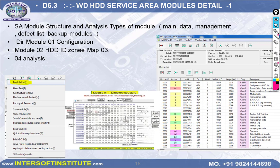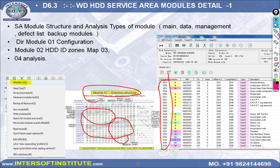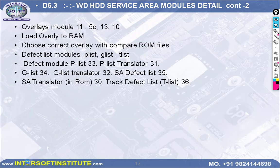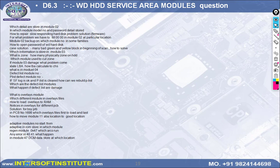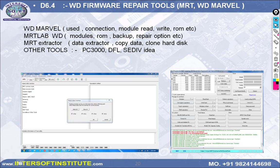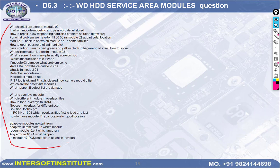Then service area: what is the service area, service area lease module, head test, read/write module, directory structure. We open HXD and show all locations in the directory — what 01 means, what 02 means, which modules are important. We show overlay modules, P-list, G-list, translator, and all important modules — which are needed for data recovery and which are not. After that, RAM load, firmware repair tools, and service area question-and-answer sections.